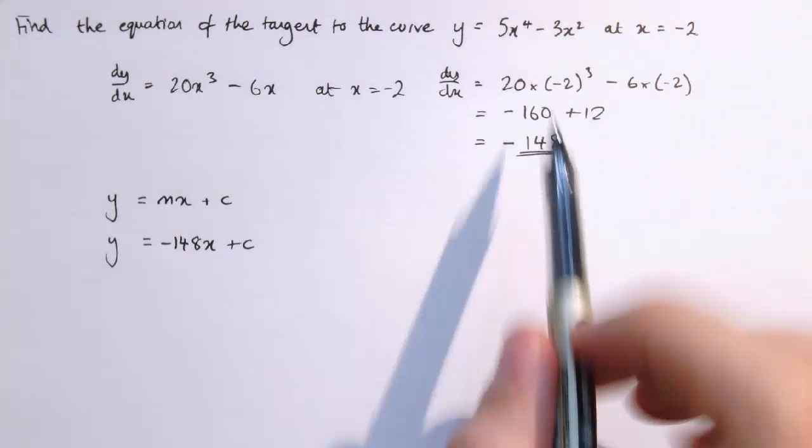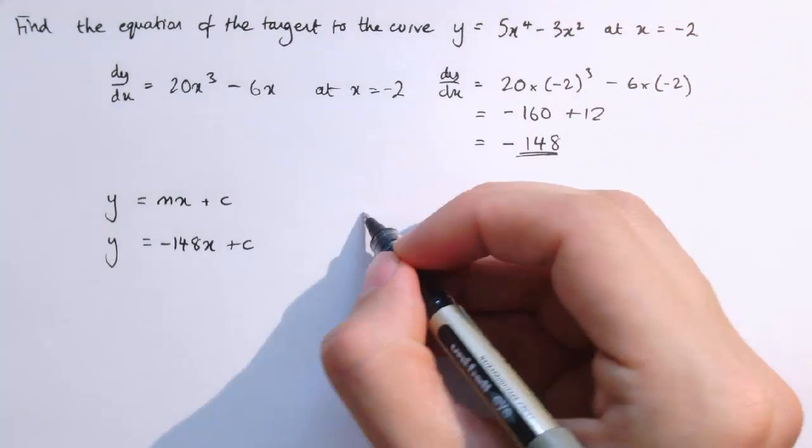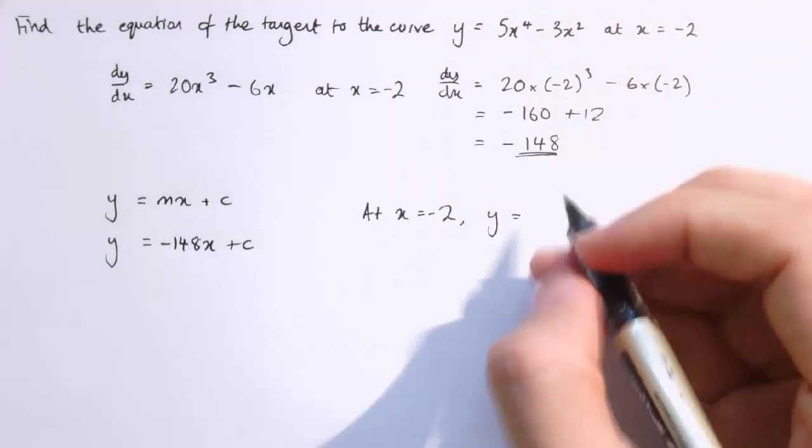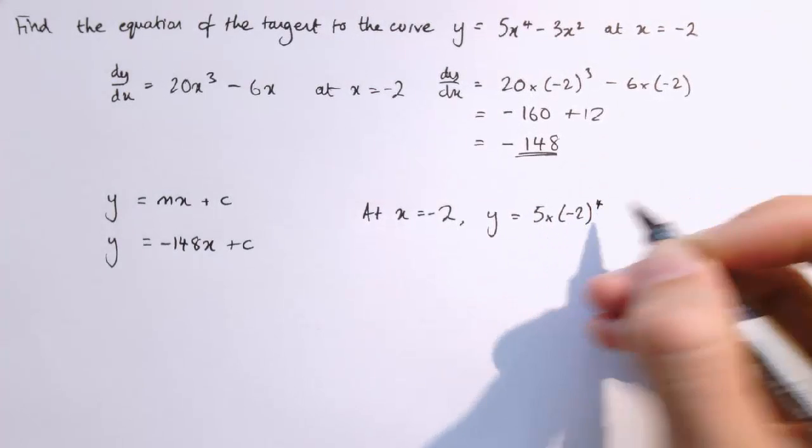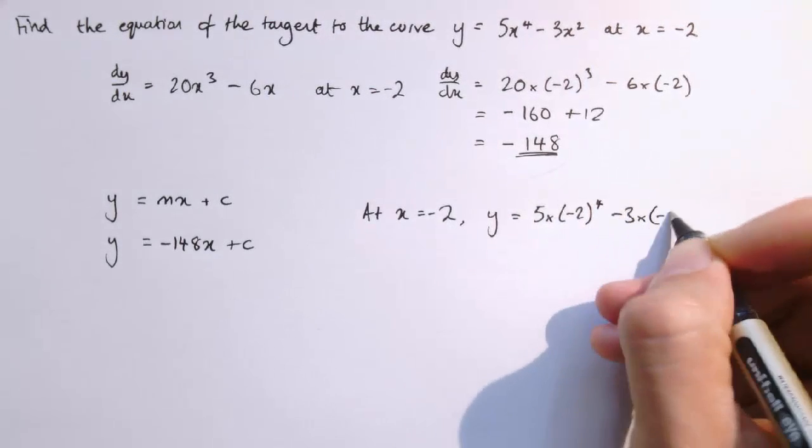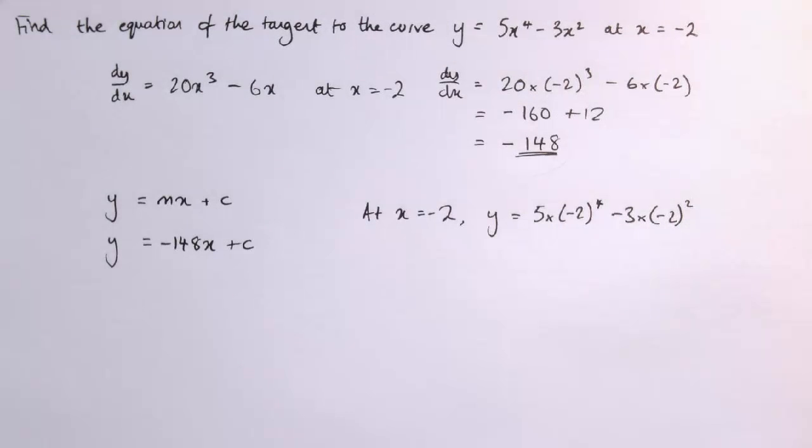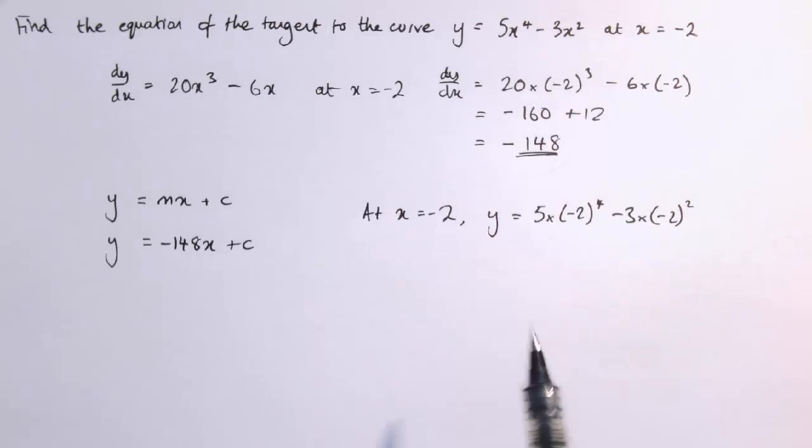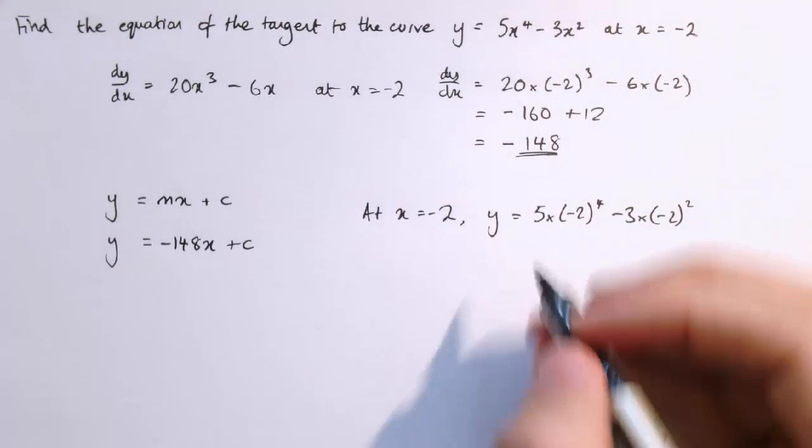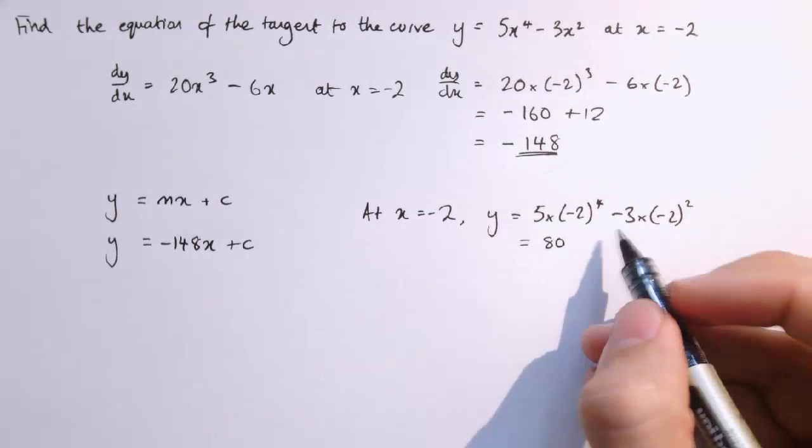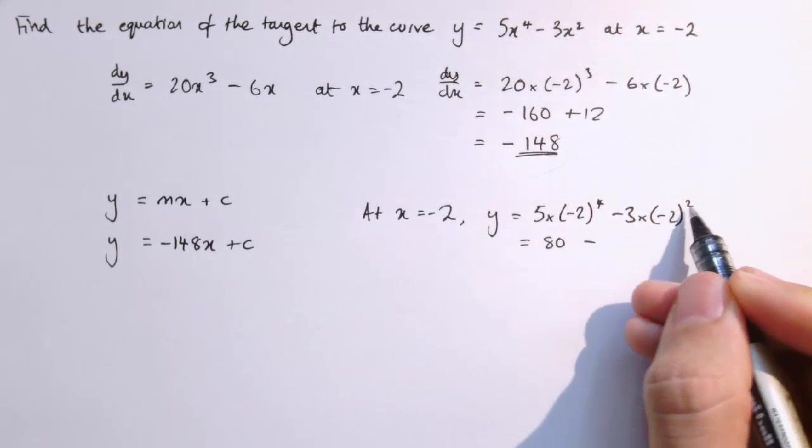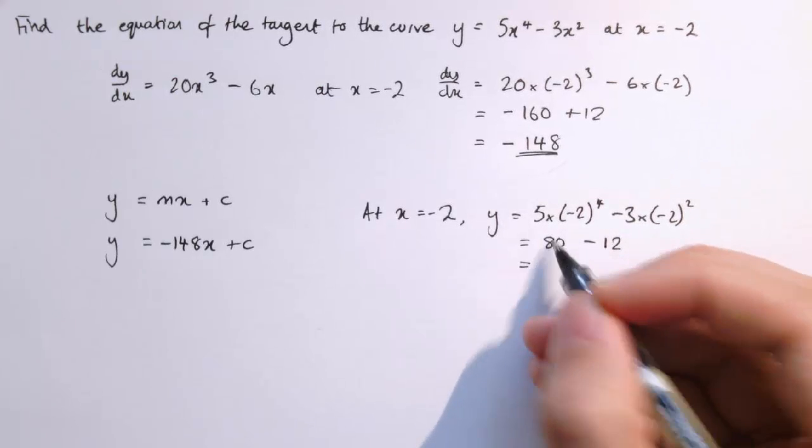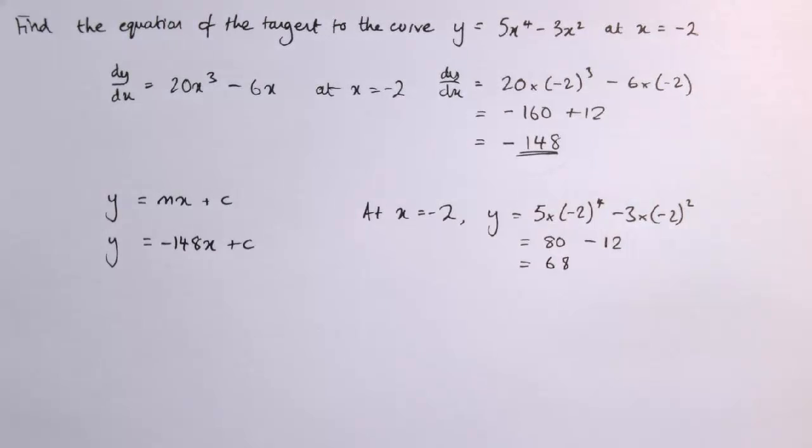We know it shares this point at minus 2. At x equals minus 2 on this curve, y equals 5 times (-2)⁴ minus 3 times (-2)². 2 to the 4 is 16, so -2 to the 4 is also 16, and 5 times 16 is 80. Then minus 3 times (-2)², which is minus 3 times 4, which is minus 12, giving us a value of 68.